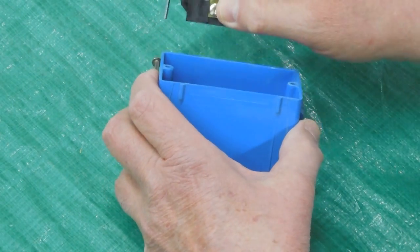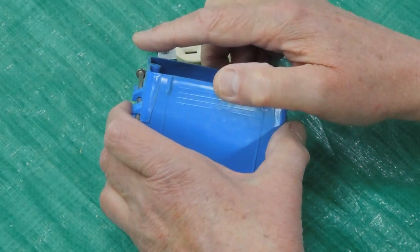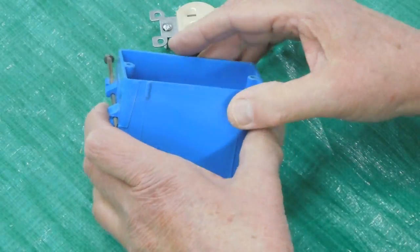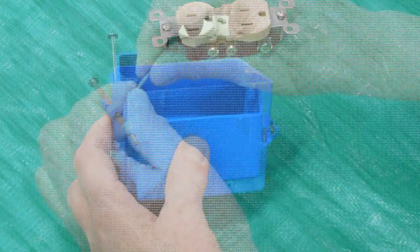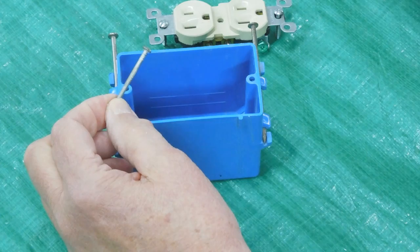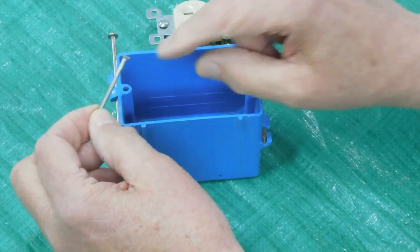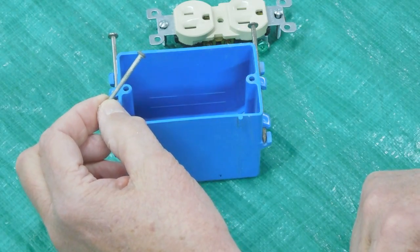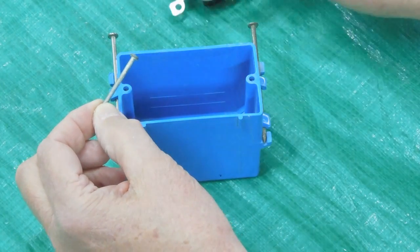Just how long that thread is is going to determine how thick the drywall is and how well this box was installed in the first place. Sometimes you'll have to get a longer screw to make up for the extra thickness. These are 6-32 threads on all of these outlets and switches.